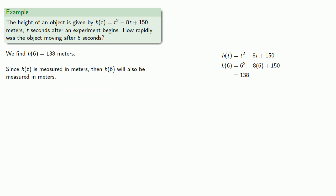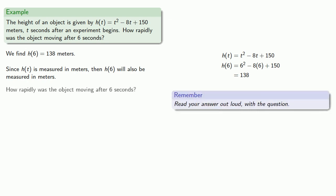Before we box in this answer and turn in our work, let's remember something useful: read your answer out loud with the question. The question asks how rapidly was the object moving after 6 seconds? The answer, 138 meters. It's important to recognize that this answer of 138 meters doesn't really answer the question "how rapidly." So even if this number is correct, it's not an answer to our question.